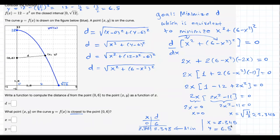There you go. So conclusion, when x is equal to 2.345 and y is equal to 6.5, this distance will be minimized, right? Okay.